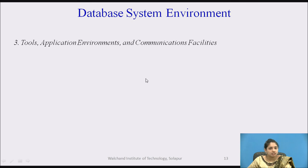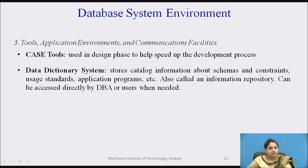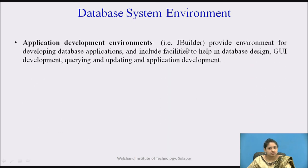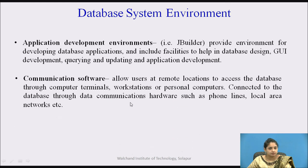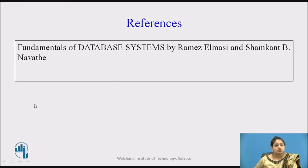Next are tools, application environment, and communication facilities. CASE tools are used in the design phase to help speed up the development process. The data dictionary system stores catalog information about schemas, constraints, usage standards, and application programs. Application development environments like JBuilder provide facilities for database design, graphical user interface development, queries, and application development. Communication software allows users at remote locations to access the database through terminals, workstations, or personal computers connected via data communication hardware such as phone lines or local area networks. These are the references from the database systems textbook by Ramez Elmasri and Shamkant Navathe.